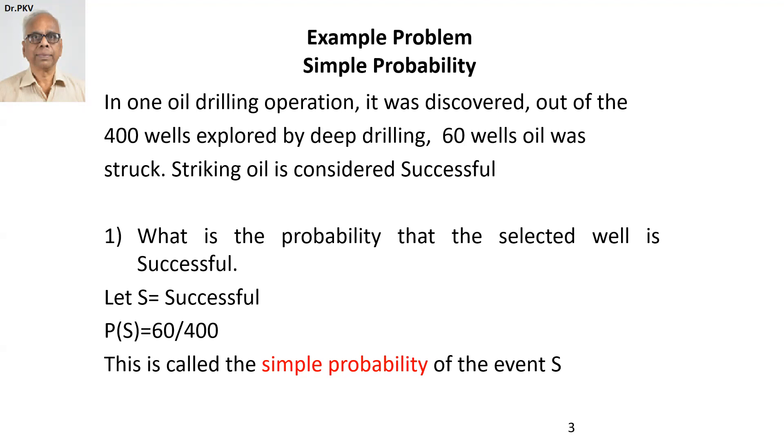Suppose we represent S, the event which is equal to successful, then by the definition, probability of S equals favorable cases to the success divided by total number of cases. In this case, 60 wells had oil found. So it is equal to 60 divided by 400. And this is called the simple probability of the event S.